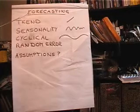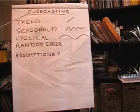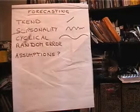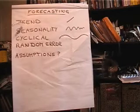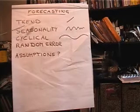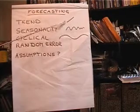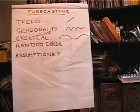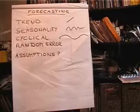Hi again. Today's topic is forecasting. What we try to do is capture some of these aspects in any data set, the first one being trend. Trend is typically a long-term upward or downward motion in sales or whatever it is that you're trying to forecast.